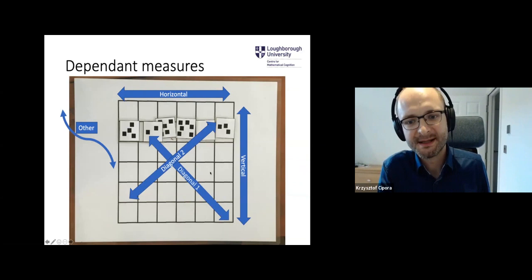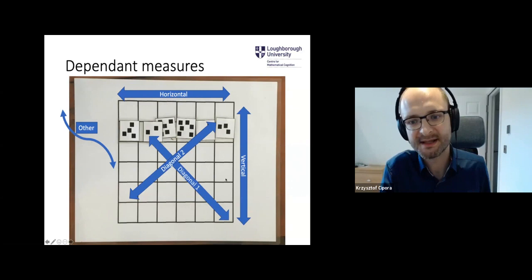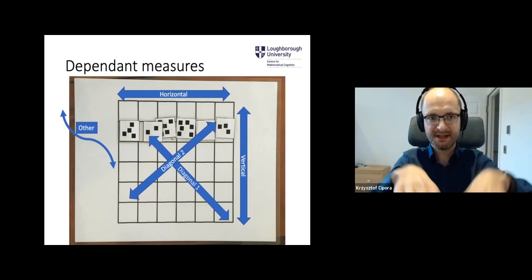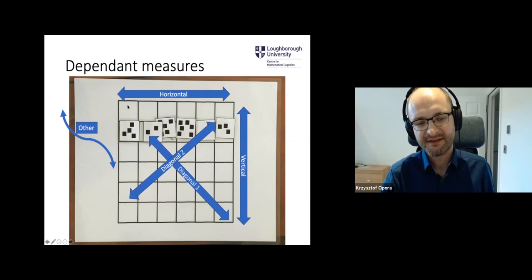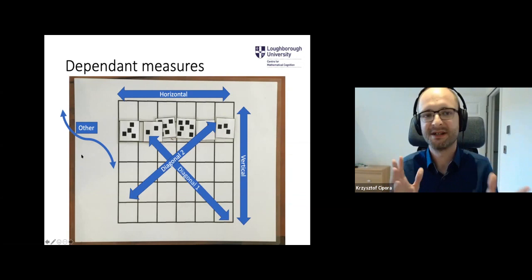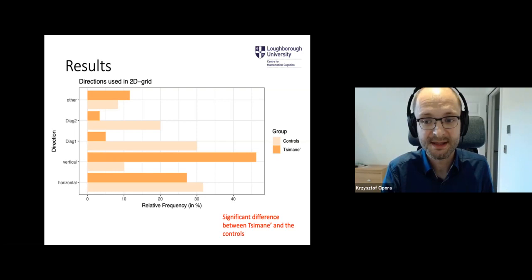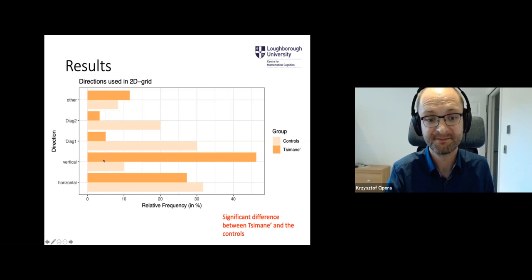We had the six-by-six grid and classified arrangements participants made as either horizontal, vertical — which were in fact sagittal since the card was on the table — diagonal one going from left-top to right-bottom, diagonal two as the other diagonal, or 'other' for arrangements that didn't fit any of these. The comparison between the German control group and Tsimane people was significant. Tsimane strongly preferred the vertical arrangement, while German controls most frequently used diagonal and horizontal arrangements.